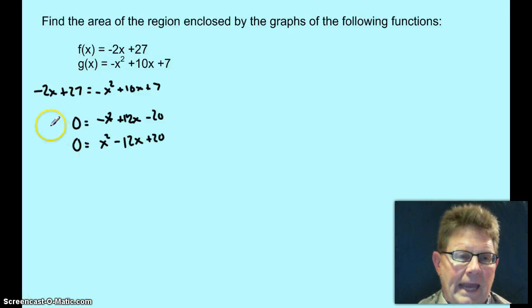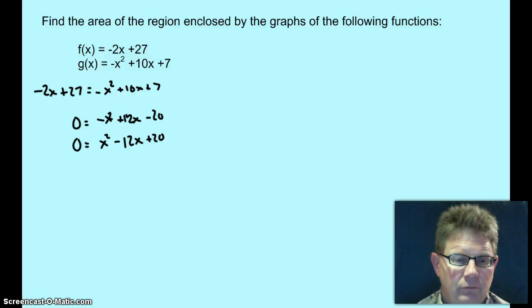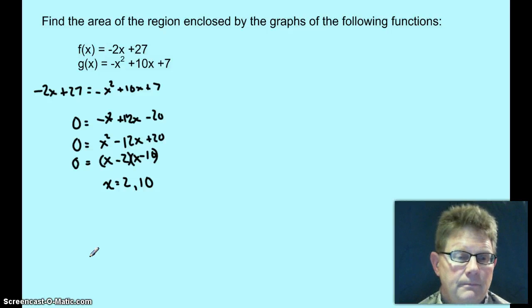So I added 2x to both sides, subtracted 27 from both sides, and then I wanted the coefficient of x squared to be positive. So I multiplied each term by negative 1, and now I'm ready to factor. Go ahead and factor and solve for x. So these two functions intersect each other twice. Well, it's a line and a parabola. The intersections are either going to be 0 points, 1 point, or 2 points. This happens to be 2 points.